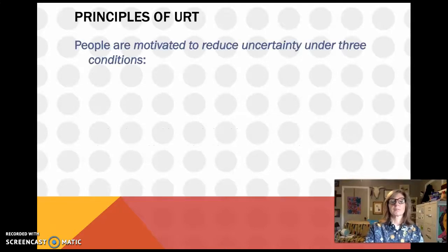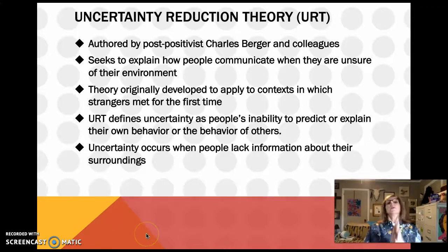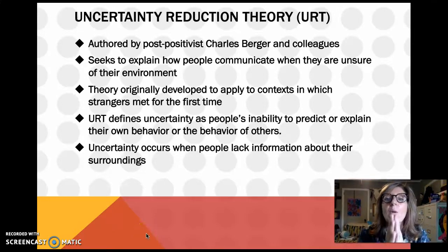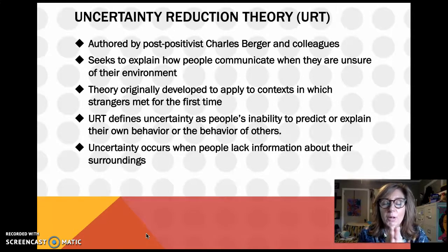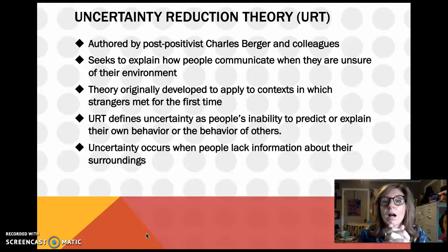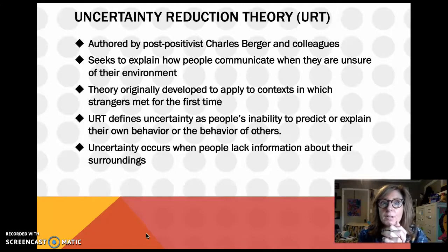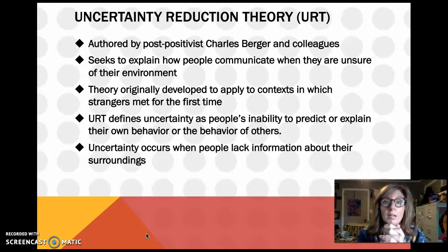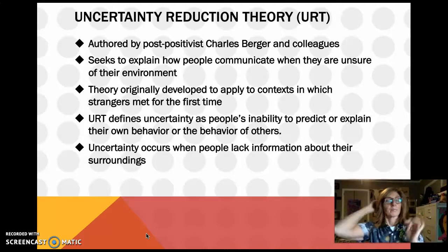This theory looks at how we respond in situations where the factors are uncertain. The bus stop is a perfect example — you kind of don't know where people are coming from or how they're going to act. At the bus stop there's a mish-mash of all kinds of people: people in suits, people who look like they haven't bathed in a while, students — all kinds of different people.